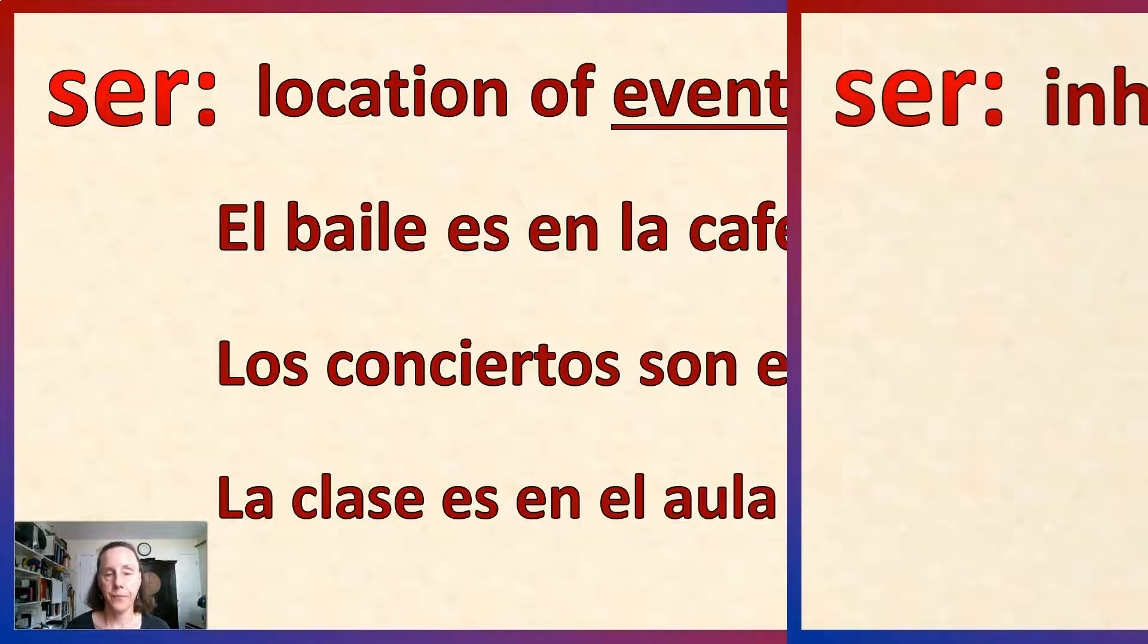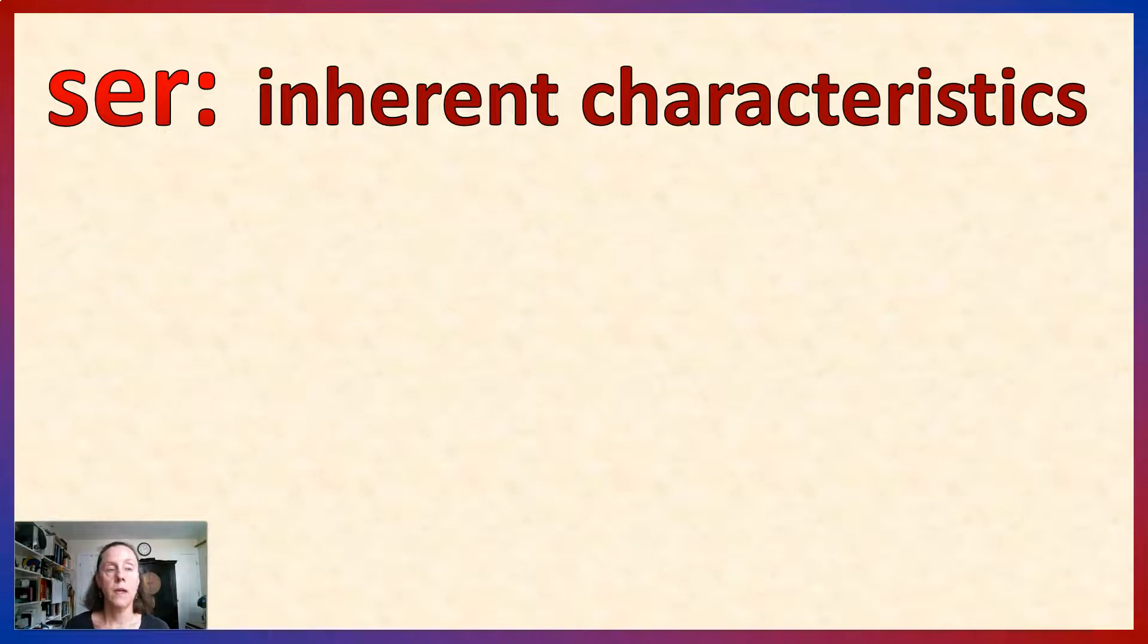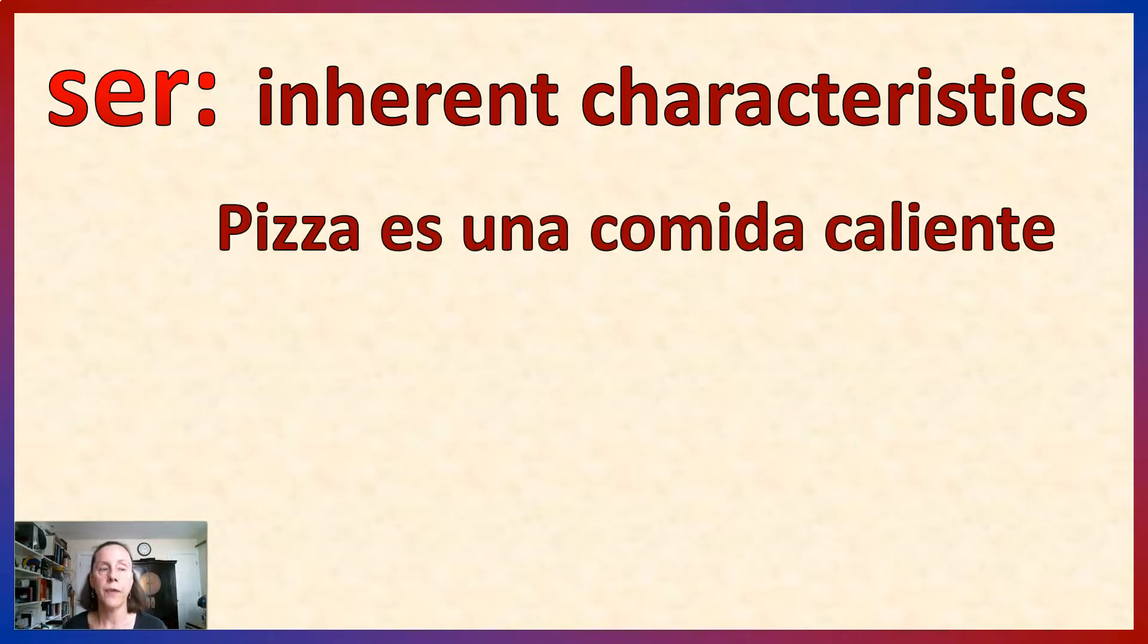Now let's talk about inherent characteristics. Another way of thinking about inherent characteristics is that ser functions as an equal sign. So, I can say pizza equals a hot food. Pizza es una comida caliente. There is no situation where the default for pizza is cold. In that case, it would just be raw bread with shredded cheese on top. That's not a pizza.